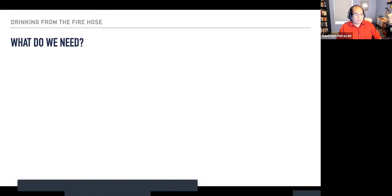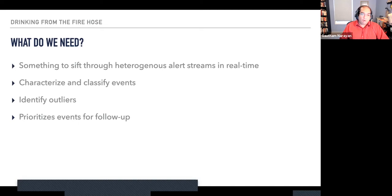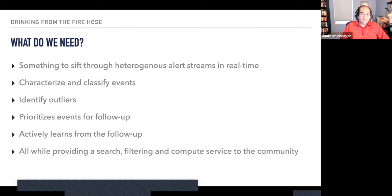So what do we actually need, based on those last few slides that I went through? We need something to sift through these heterogeneous alert streams in real-time. We want to characterize and classify the events that are in the alert stream. We want to identify things that are potentially rare, so outlier characterization in particular. We want to be able to prioritize events for follow-up automatically, rather than have a human, like some grad student, figure out I want this object. That's simply not going to scale when you have 10 million alerts every single night. And you want to actively learn from that follow-up. You want to have a system that improves over time and gets better and better with every classified spectrum. So the core functionality is to do all of the above and provide a search and filtering and compute service to the entire community.